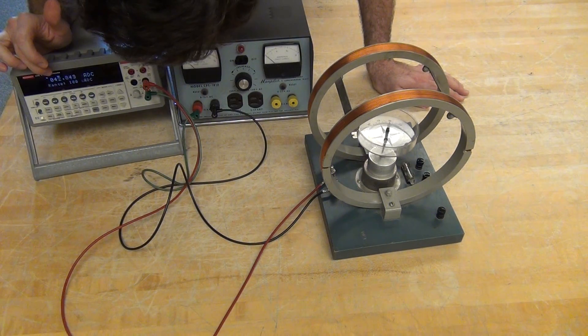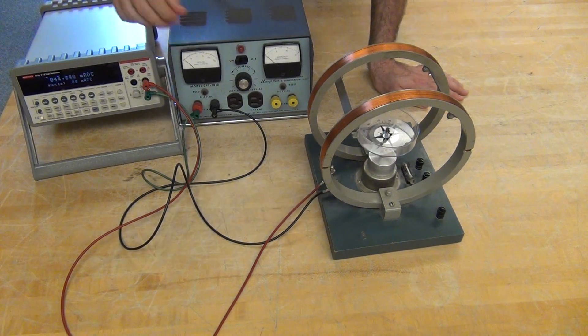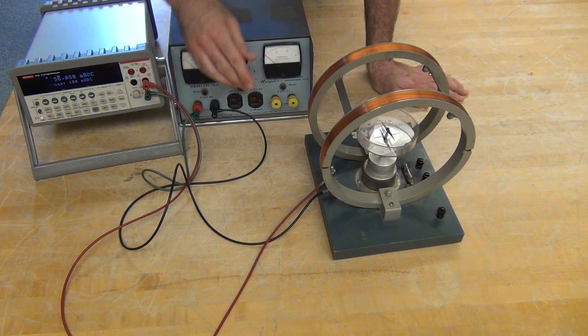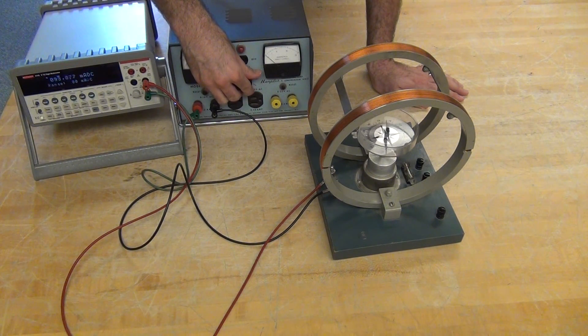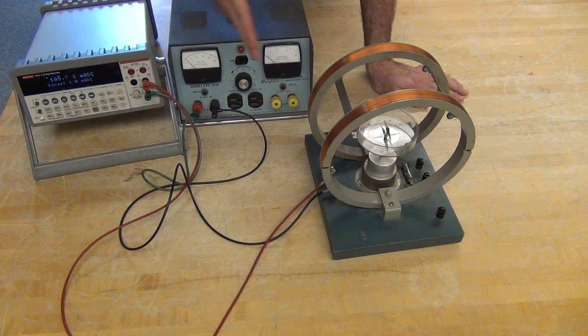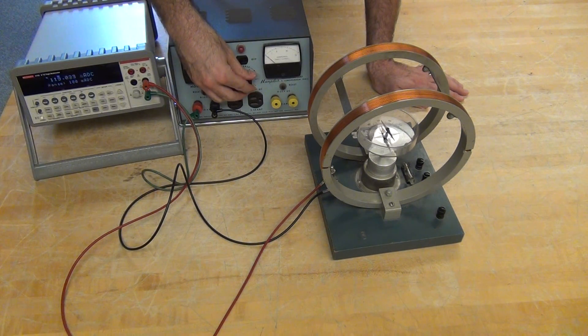I would measure that current and then decrease such that I got 50 degrees. Measure the current at 30 degrees, 40 degrees, 20 degrees, 10 degrees, all the way down to zero.